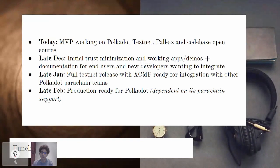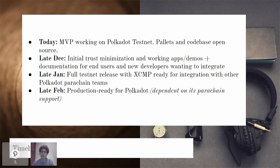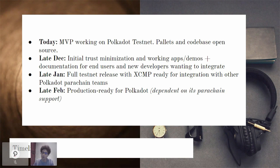Looking at our timeline: today we have this MVP working on Polkadot testnet, and our pallets and codebase are all open source. Towards late December, we'll have our initial trust minimization up and will be sharing a working demo for end users to play with, plus documentation and tutorials for developers of other parachains who want to integrate with the bridge. For late January, we're targeting a full testnet release with full production-ready cross-chain messaging and integration with other parachain teams. Late February is when we're expecting to be fully production ready for Polkadot. The launch is dependent on Polkadot supporting parachains, which we're hoping will come in early next year, and we'll be ready to launch as soon as parachains are supported.